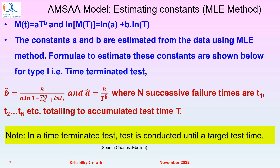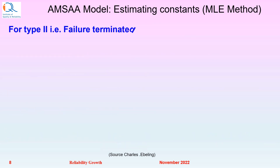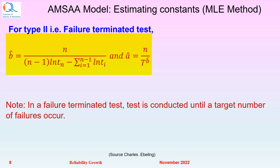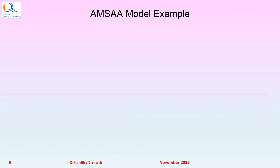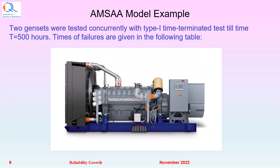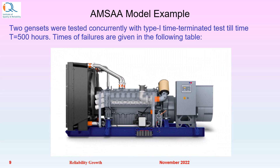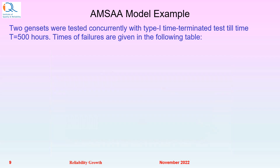In a time-terminated test, the test is conducted until a target test time is achieved. Here are the formulae for Type 2 test to calculate A and B. In a failure-terminated test, the test is conducted until a target number of failures occurs. Now let us see an application example: two gensets were tested concurrently with Type 1, time-terminated test, till time T equals 500 hours. Times of failures are given in the following table.